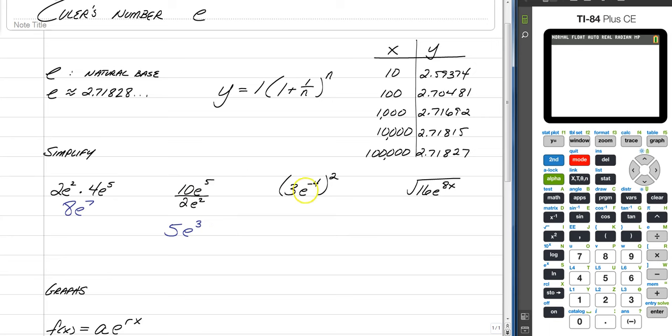When we raise exponents to other exponents, we still multiply, but numbers are still raised to the exponents. So, 3 squared is 9, and negative 4 raised to the second is multiplying, so e to the negative 8. But, of course, negative exponents want to be downstairs or on the other side, so this becomes 9 over e to the eighth power.